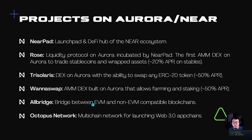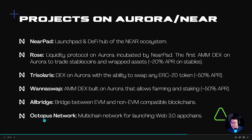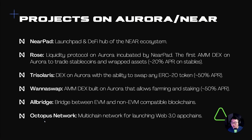We also have Wanaswap, which is more similar to Sushiswap and is also giving about 50% APR for the NEAR-Ethereum pair. Then we have AllBridge, which is a bridge between EVM and non-EVM compatible blockchains. So for example, if you are from the Terra ecosystem and want to bridge from your Terra wallet into the NEAR or Aurora ecosystem, you use AllBridge to send your LUNA and UST over. And last but not least, we have Octopus Network, which is a multi-chain network for launching Web3 blockchain applications, also known as AppChains.